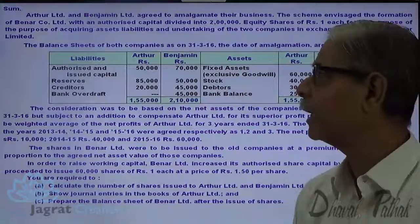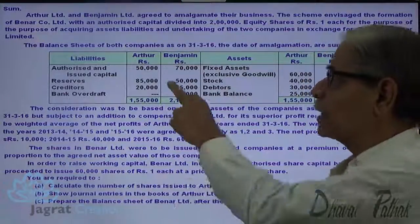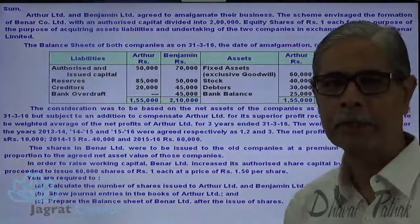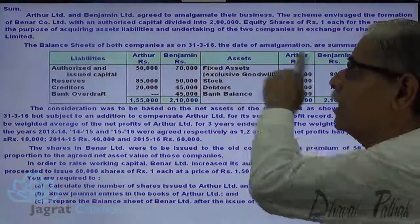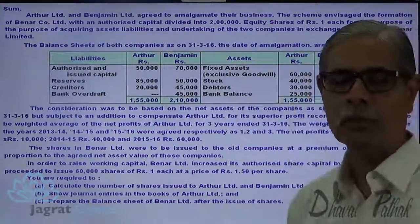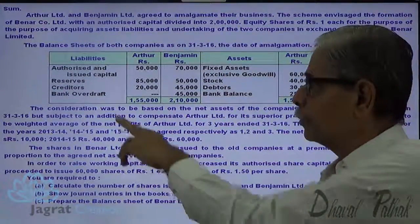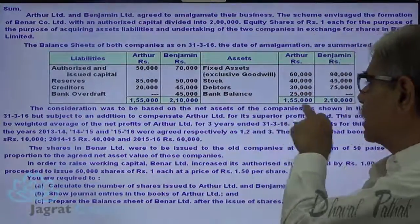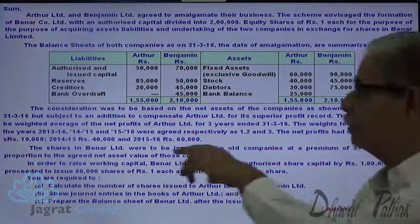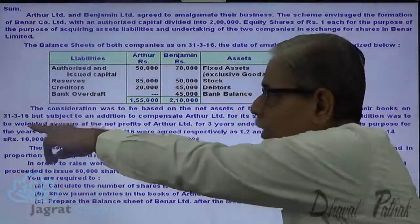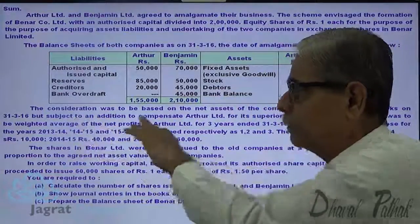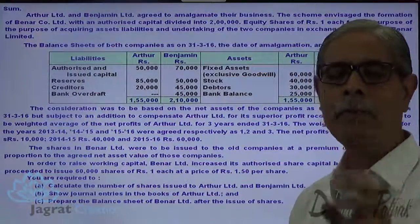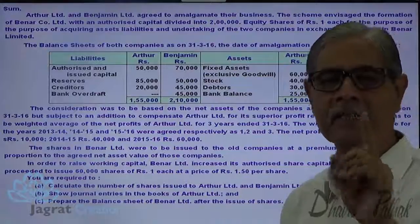New company Banner Ltd. is to purchase Arthur Ltd. and Benjamin Ltd. The balance sheets as on 31-3-2016 are given. The consideration was to be based on the net assets of the companies as shown in the books as on 31-3-2016, so payment is to be based on the net assets of both companies.